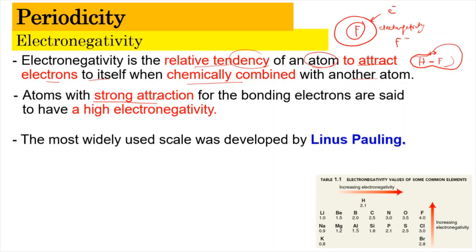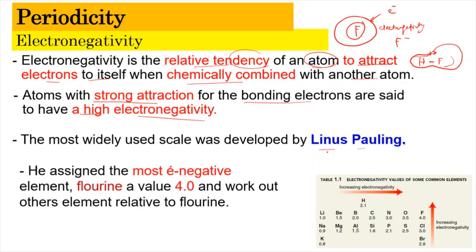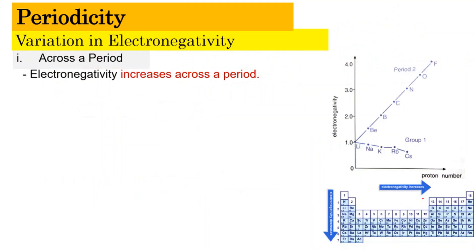Atoms with a strong attraction for the bonding electrons are said to have a high electronegativity. The stronger the attraction for electrons, the higher the electronegativity. The most widely used scale was developed by Linus Pauling. According to him, the most electronegative element is fluorine, with a value of 4.0. By understanding that fluorine has the highest electronegativity, he worked out the electronegativity of other elements with reference to fluorine. As you can see, increasing electronegativity goes towards fluorine — across the period, electronegativity increases, and the same goes up the group.